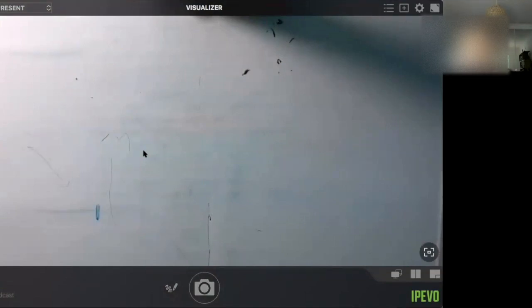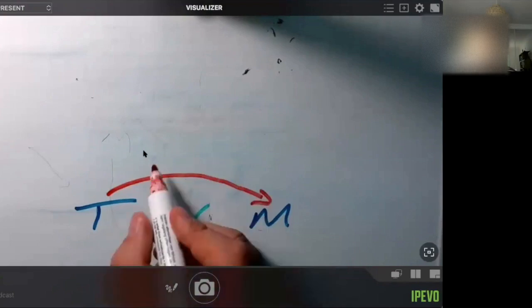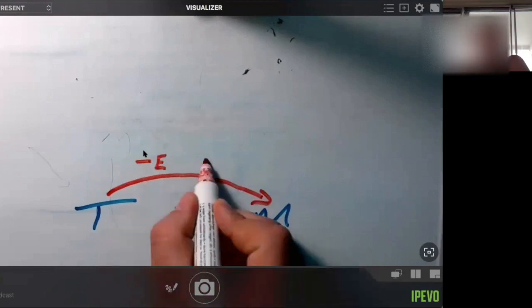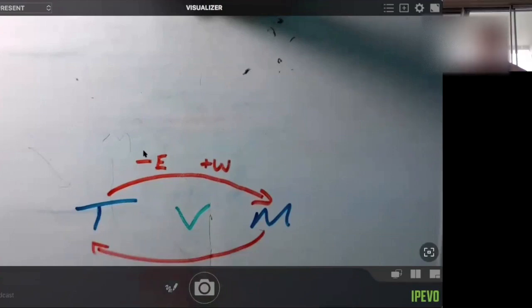To go from true to magnetic with your variation here, when you're going this direction, I'll draw an arrow, you subtract if variation is east. And then if variation is west, we add it. That's it. And then the opposite the other way: you add east and you subtract west.